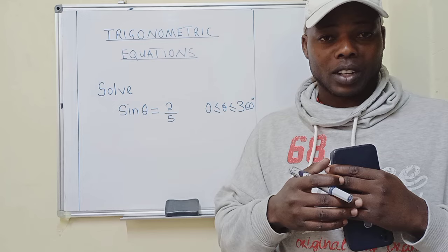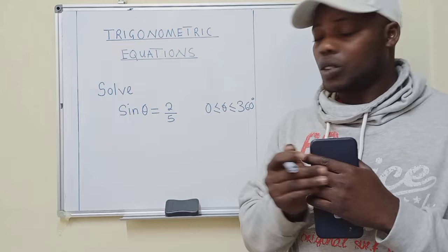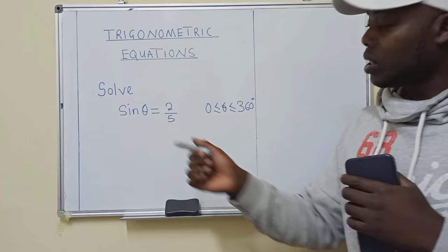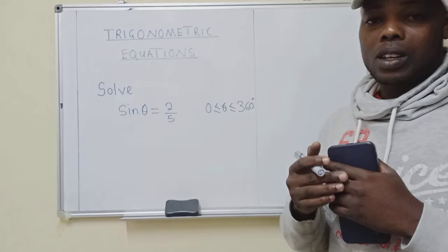I'm inviting you to learn with me on how to do this trigonometry equation. So how do you solve an equation like this one? We have been given the range. This is a range. And the equation to solve is sine theta equals 2 over 5. So how do we do this one? Let's check on how to do it.